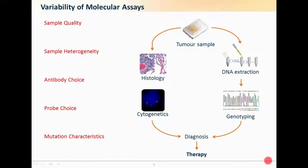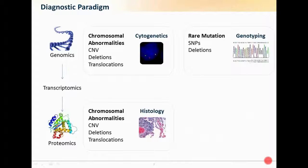For cytogenetics and running FISH, you have the probe choice — which supplier you use, which probe from a supplier, since some suppliers may have three or four different options. And the final factor, which is sometimes forgotten, is the characteristics of the mutation you're looking at. A good example is the EML4-ALK translocation, which is a relatively new diagnostic test. If you're looking at FISH, are the probes covering all of the variants currently identified, and which ones are clinically relevant?